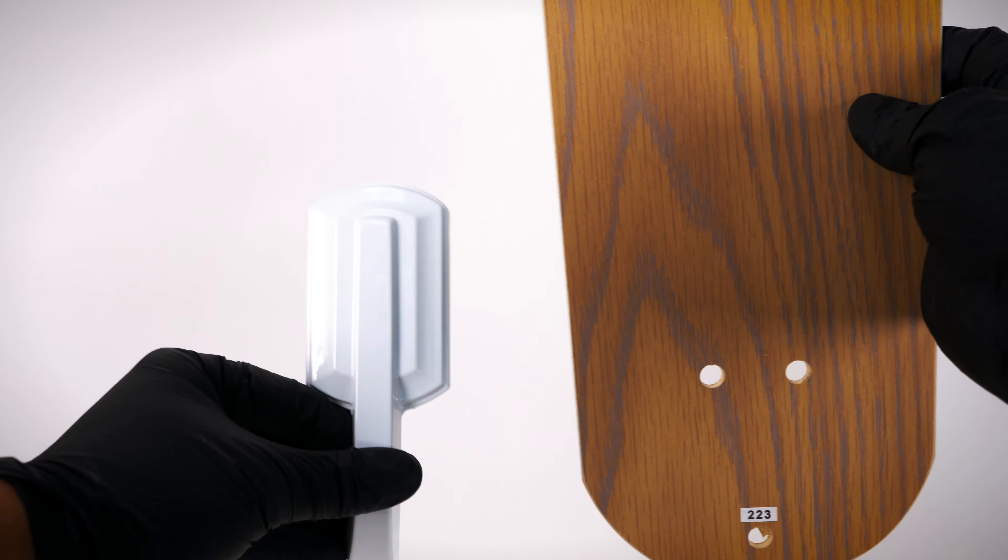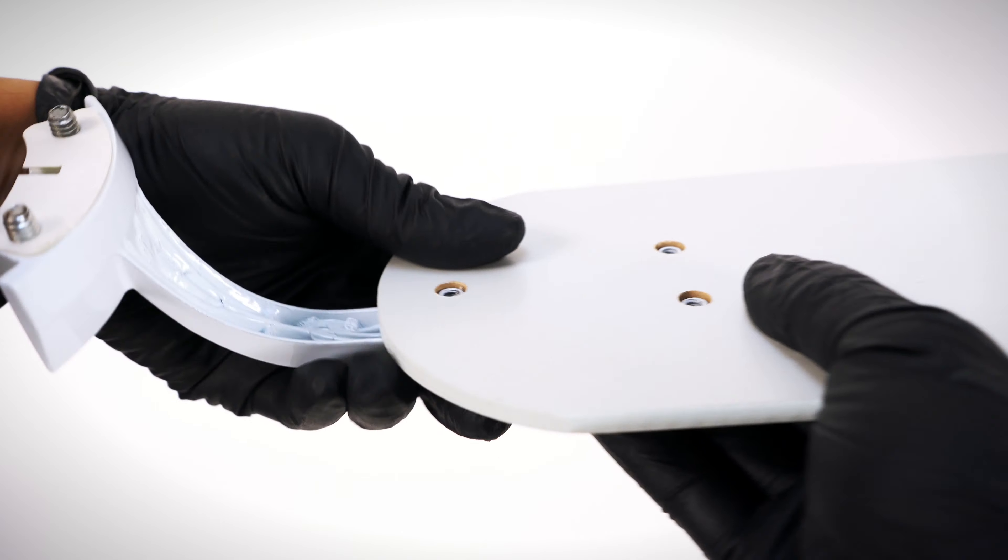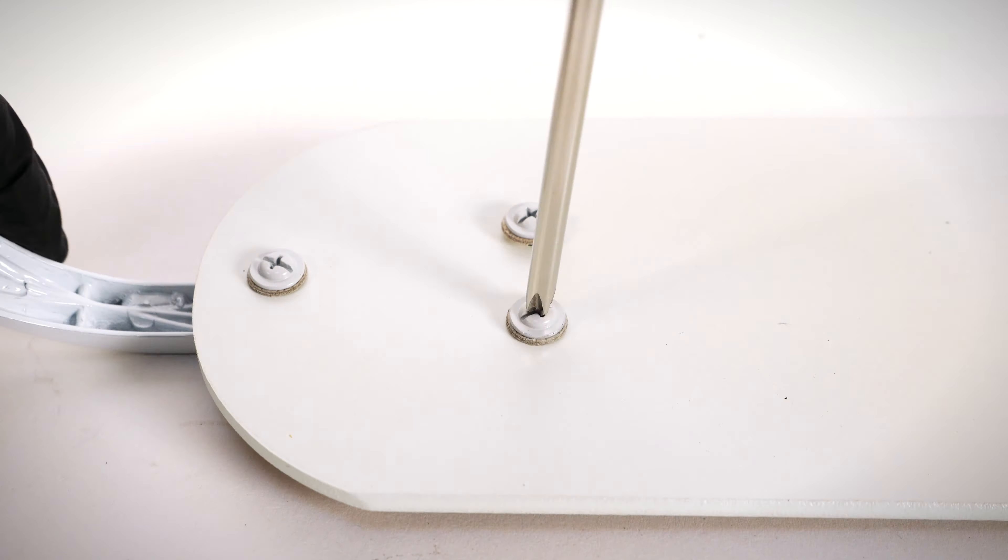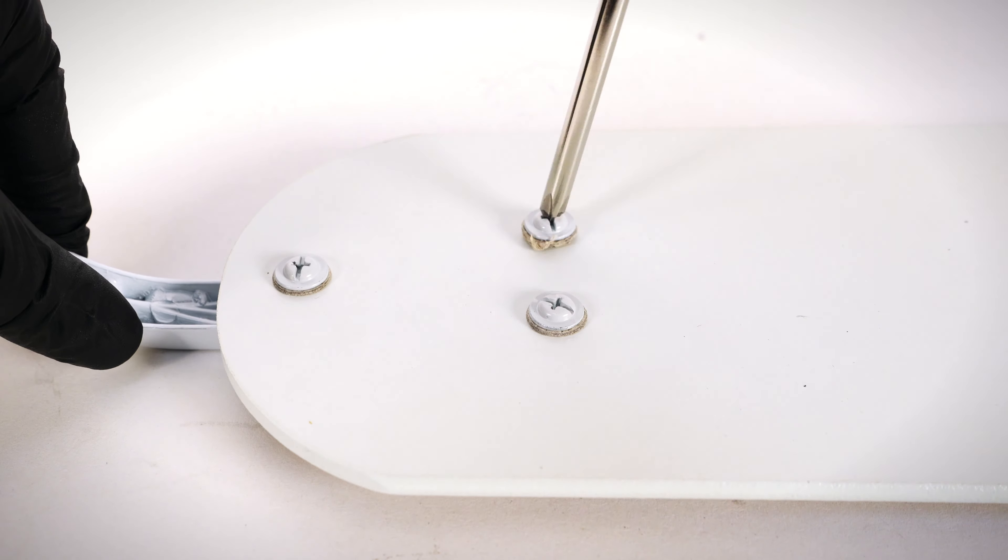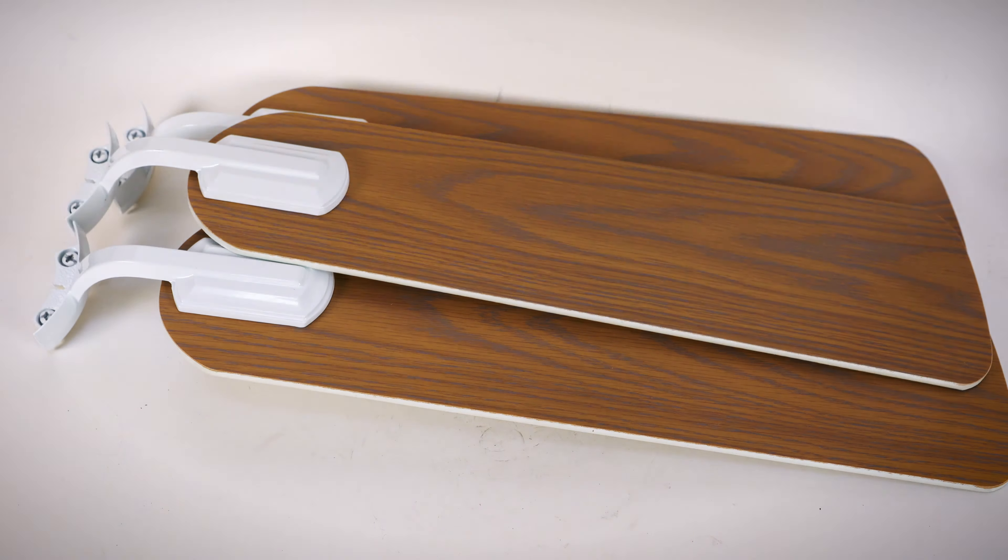Prepare a fan blade and a blade arm. Align the blade arm over the desired side of the blade. Then insert and tighten three blade attachment screws. Repeat the process for the remaining blades.